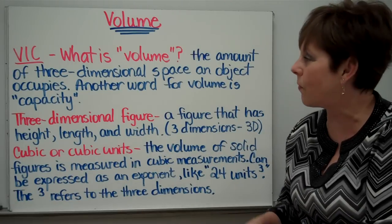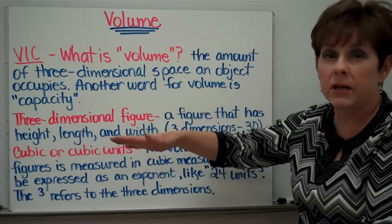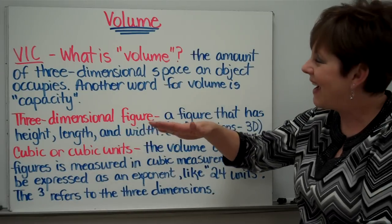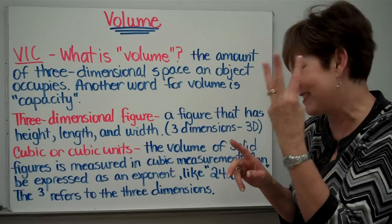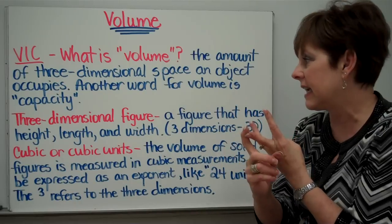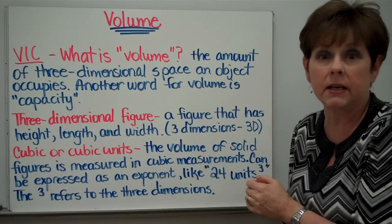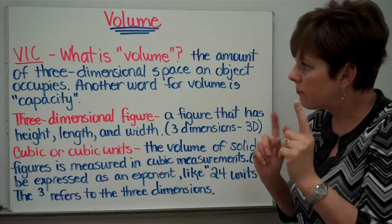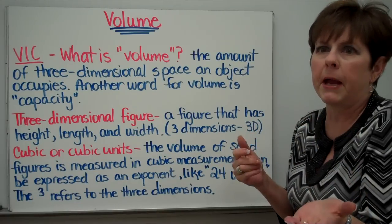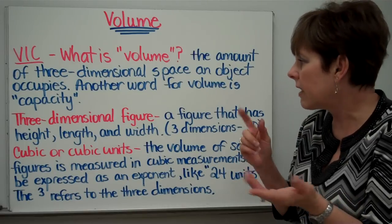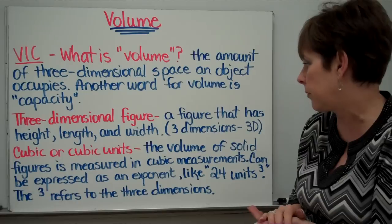What is a three-dimensional figure? You've heard of 3D before probably. This is a figure that has three dimensions: it has height, it has length, it has width. All the other figures that we've been using are two-dimensional, like when we figure up area or perimeter, they only have length and width. They don't have the height factor thrown in.